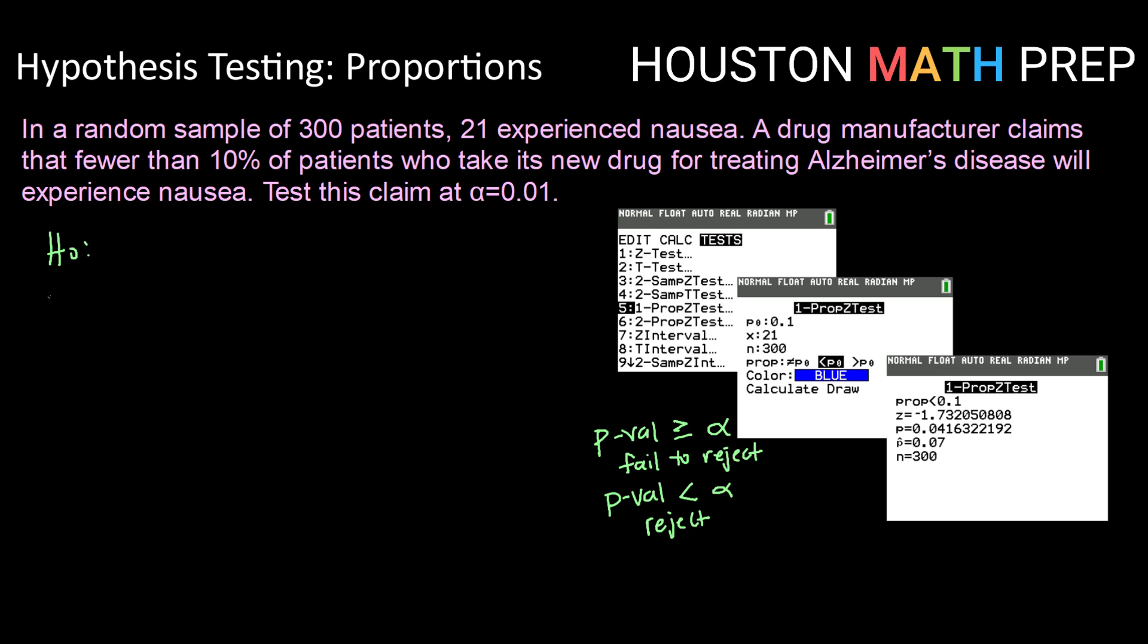So we start every hypothesis test with a pair of hypothesis statements. Here we're going to test the claim that the true proportion is equal to 10% or 0.10. And the claim here really is that they want to say that it will be less than 0.10, since they are saying that fewer than 10% will experience nausea.